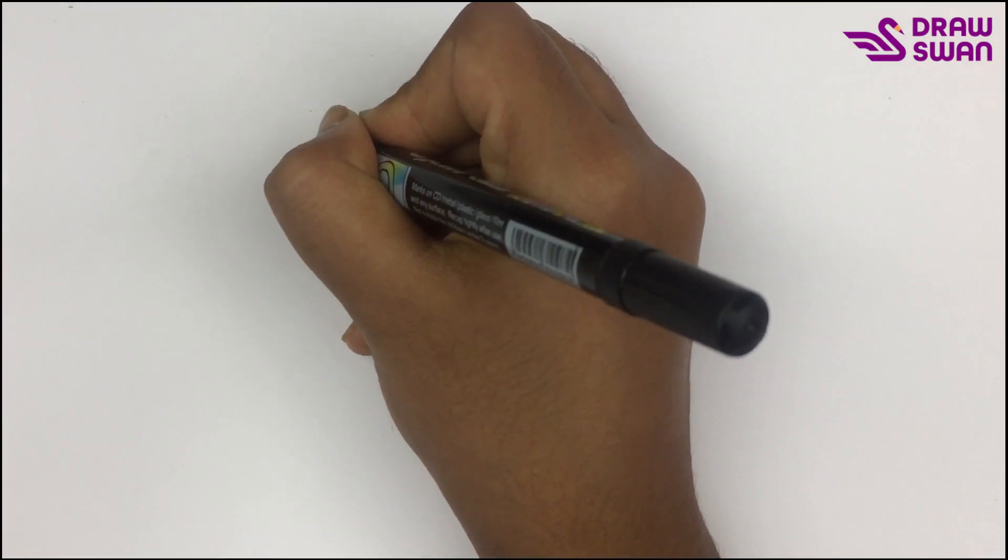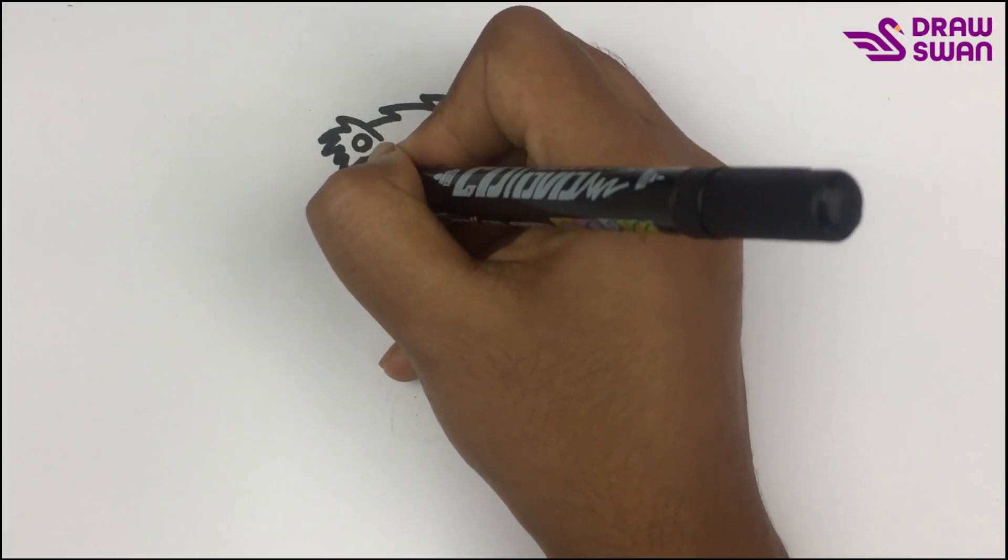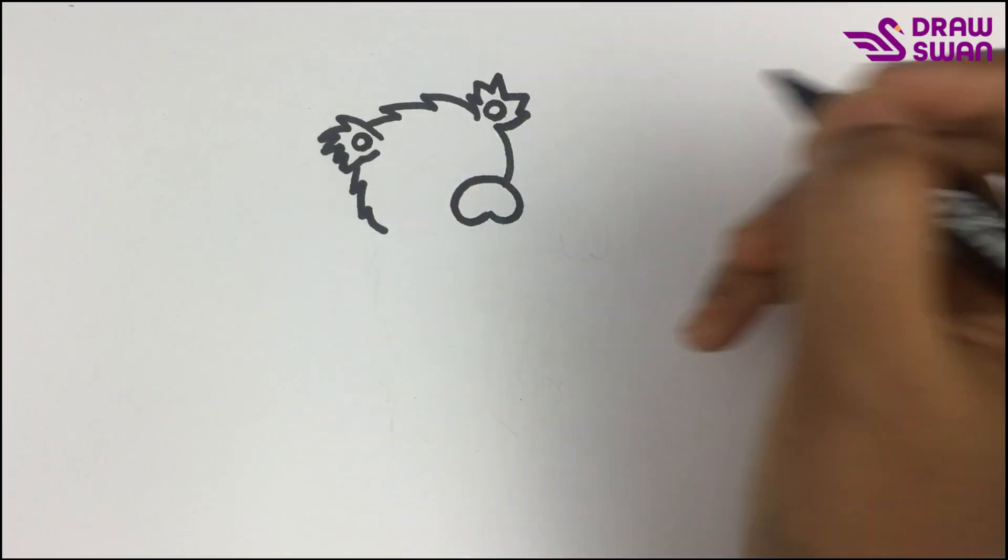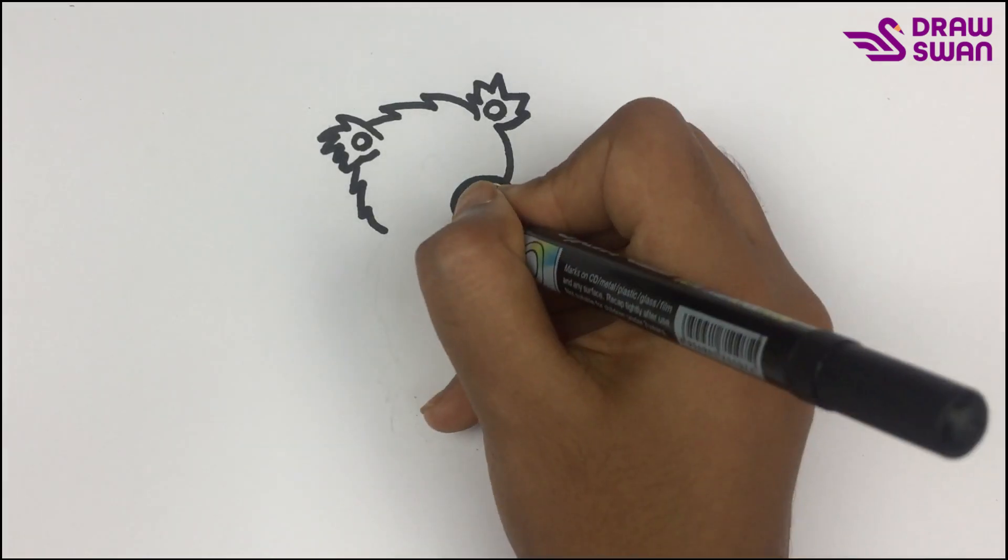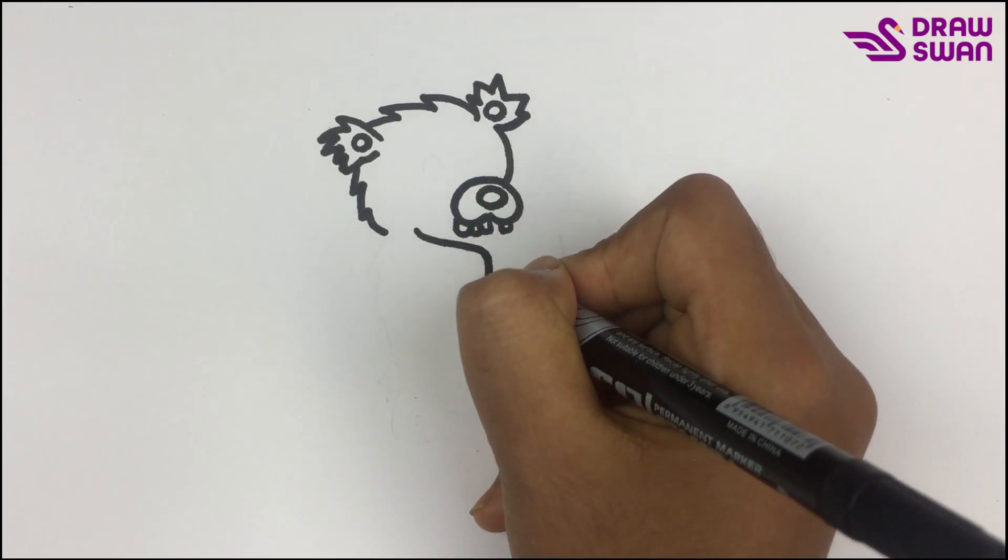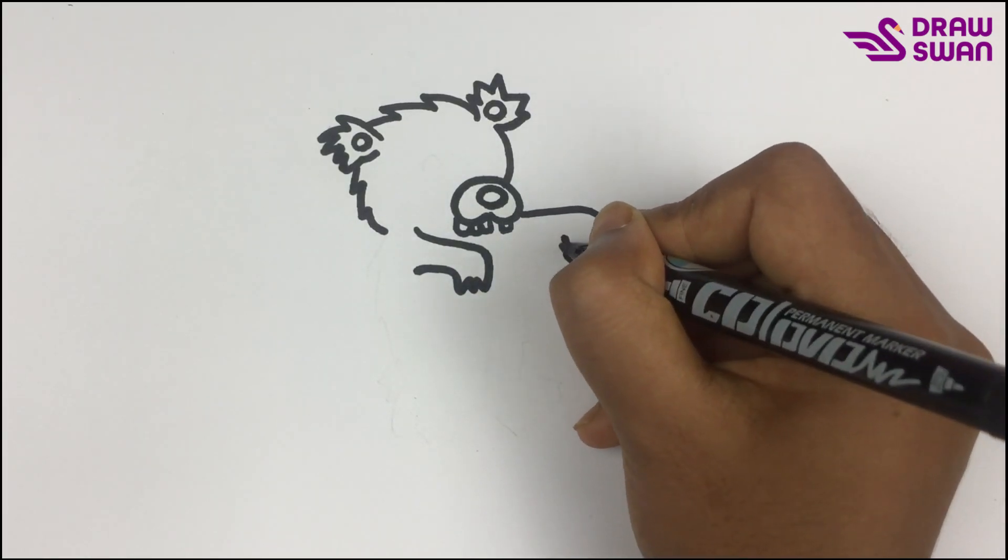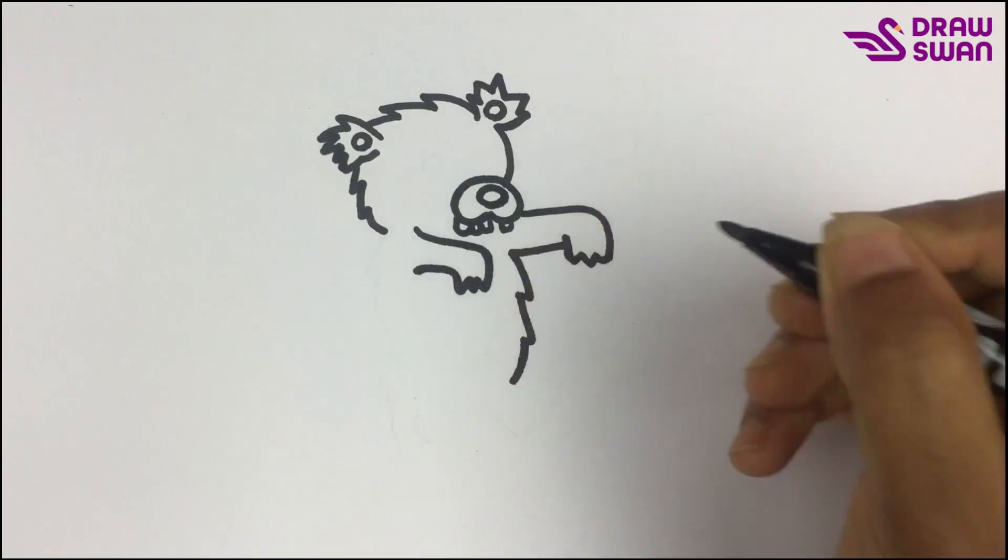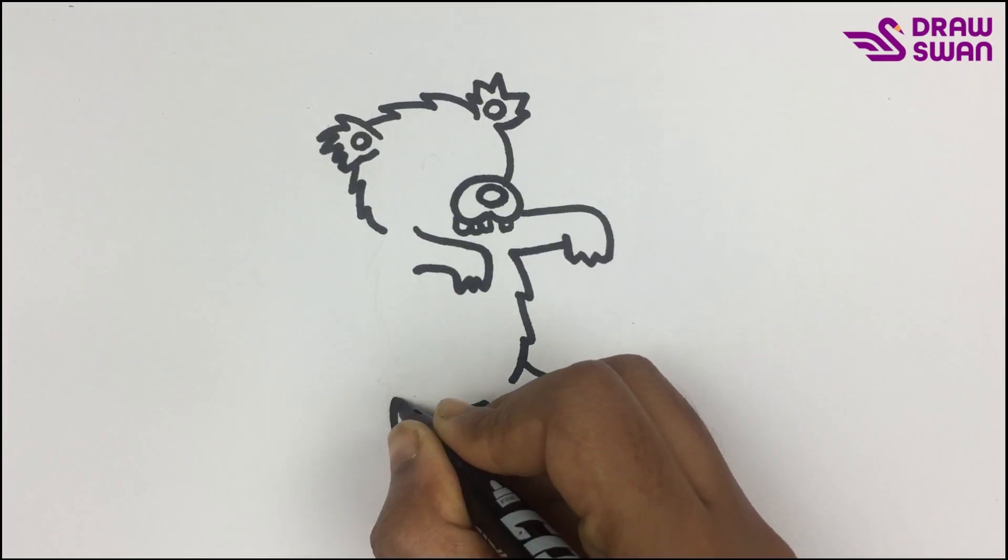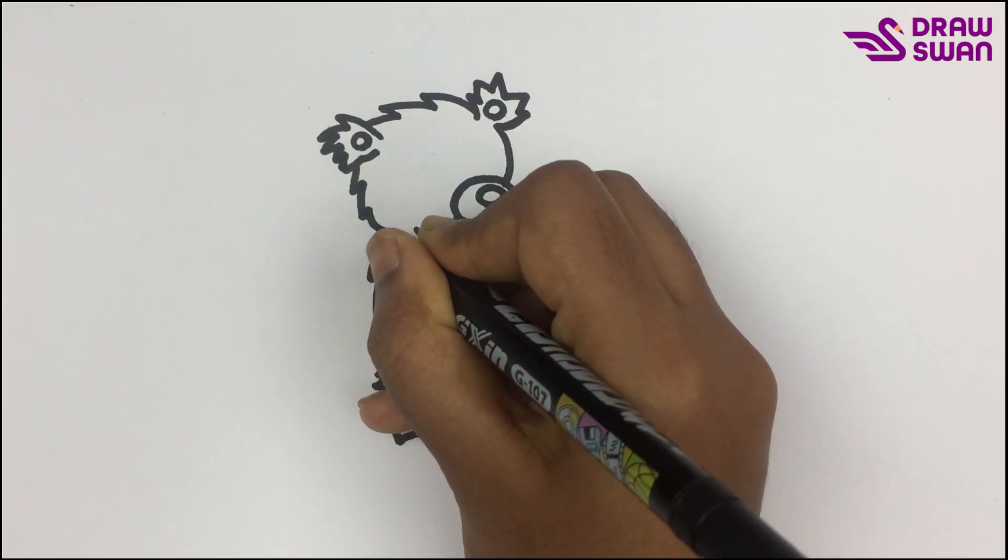This is another ear. Now I'm drawing its nose and it has some teeth. Now let's draw its hands, here's its legs and a tiny tail. Its eyes are closed.